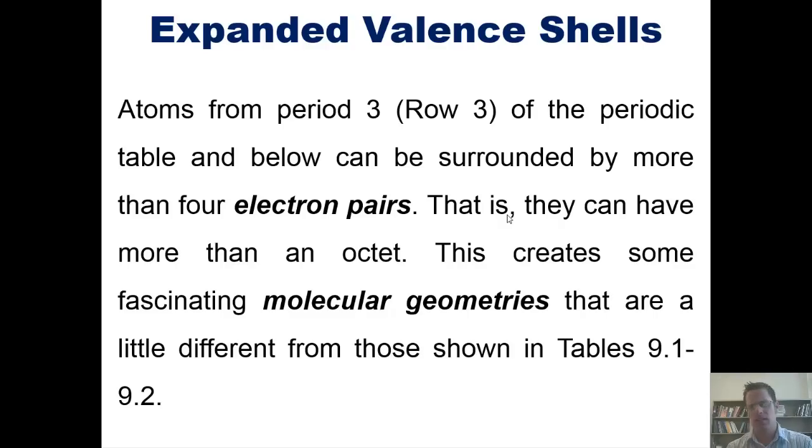I wanted to first of all let you guys know, and I've talked about this before, that once you get down to row three of the periodic table and below, atoms at that point can actually be surrounded by more than four electron pairs. In other words, they can have more than a full octet.